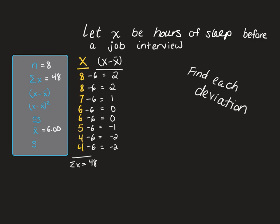I then can subtract the mean from each raw score to find each deviation, and the deviations I have are 2, 2, 1, 0, 0, negative 1, negative 2, and negative 2. If I want, I can double-check those. The sum of the deviations, or the x minus x-bars, should equal 0, and I find that they do.